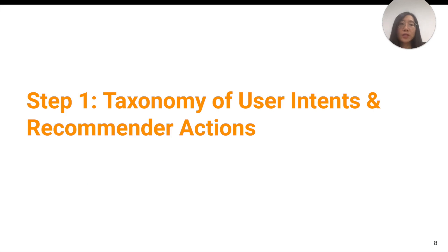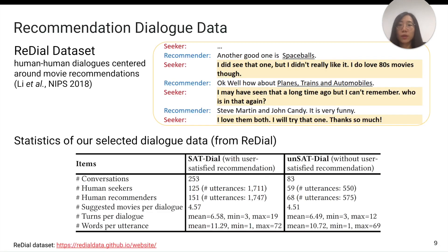To address our first question, we built two taxonomies to classify user intent and recommender actions respectively. We used the RecDial dataset, which is a public movie recommendation dialogue dataset. This figure shows a dialogue example where the recommender helps seekers find interesting movies, and seekers can give feedback on recommendations, such as 'I did see that one, but I didn't really like it.' We processed the raw dialogue data and obtained 253 satisfactory dialogues where seekers accepted at least one recommendation, and 83 unsatisfactory dialogues containing no accepted recommendations.